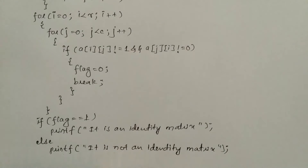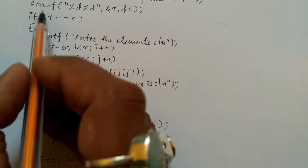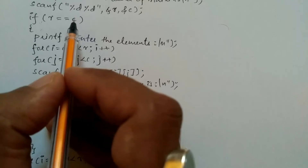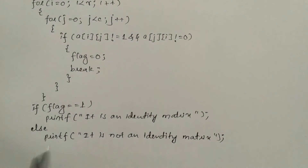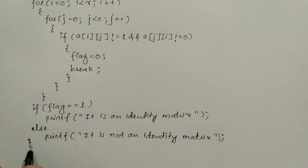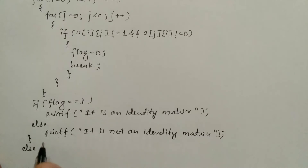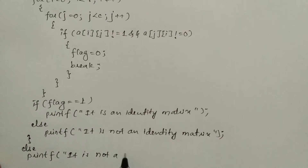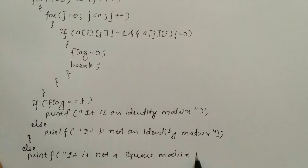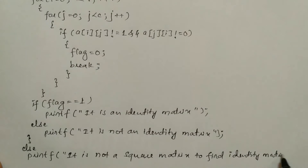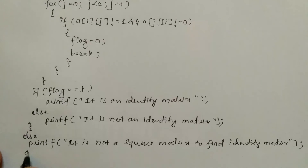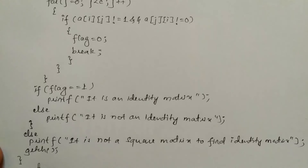Next we have got one more if statement which we used at the top — if r is equal to c, curly open brace. If this is false, then what should it display? For that, we are going to write the else part. This is the closing brace for the if part, then after if we write else, and we'll write a printf statement: 'it is not a square matrix to find identity matrix', end double quotation mark and put semicolon. Here we'll write the getch function and curly closing brace for the main function.